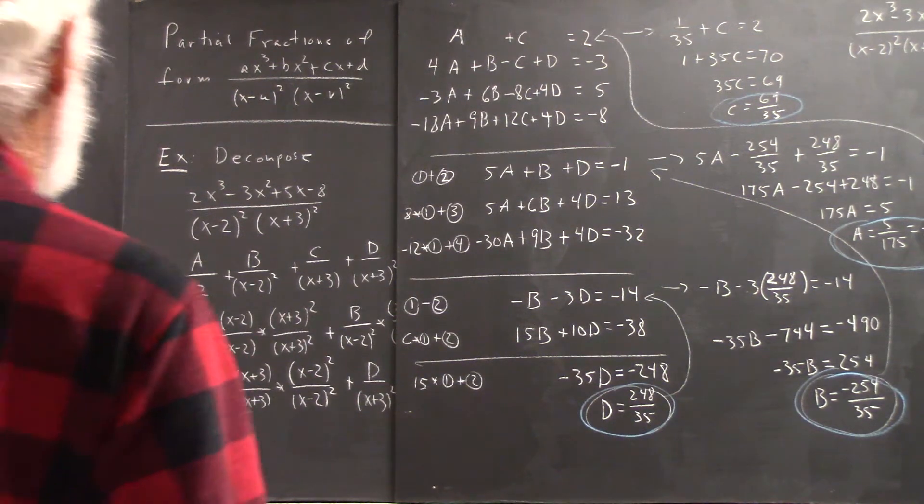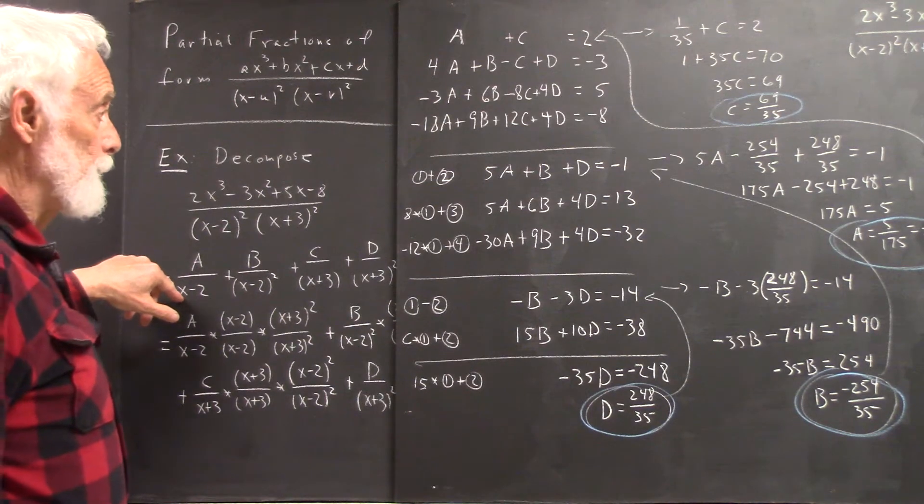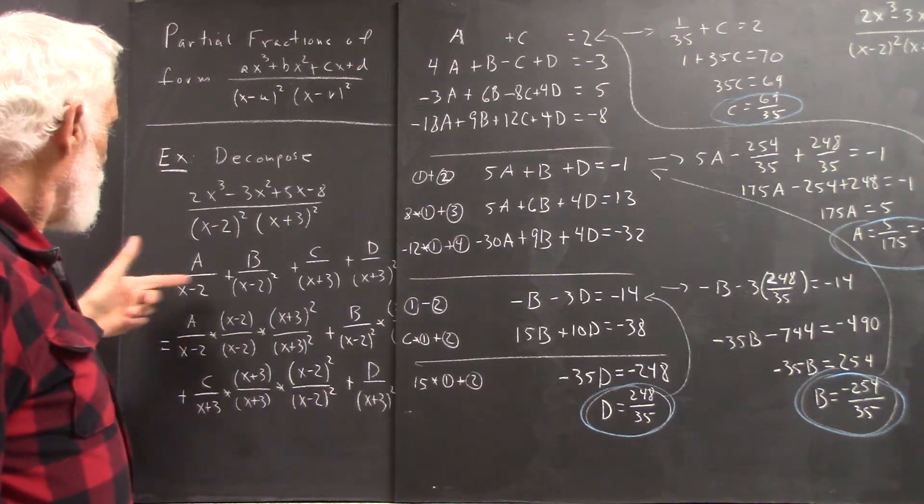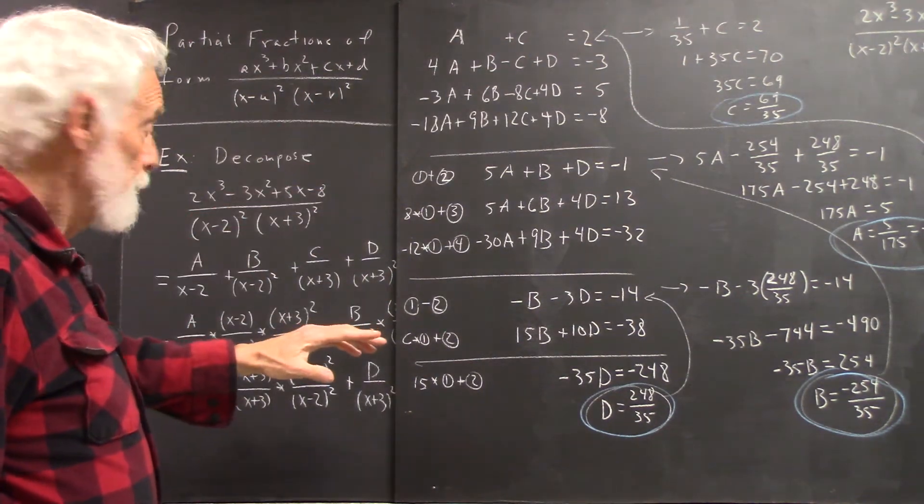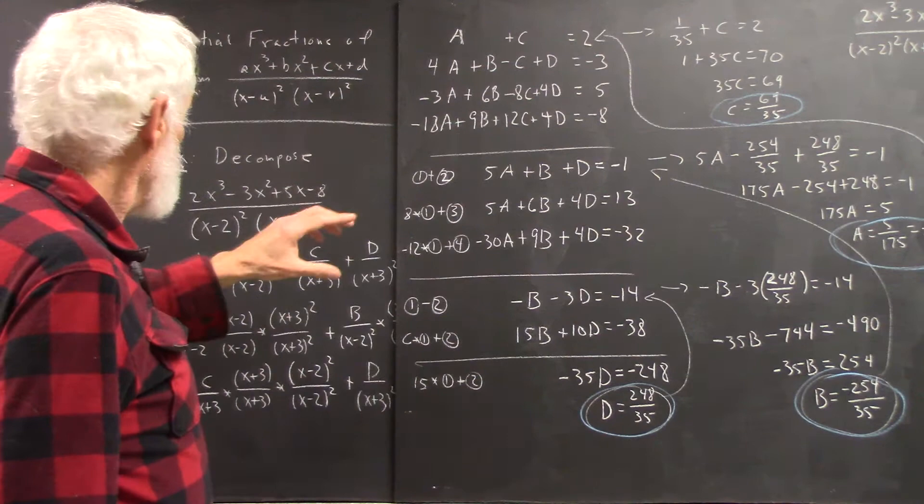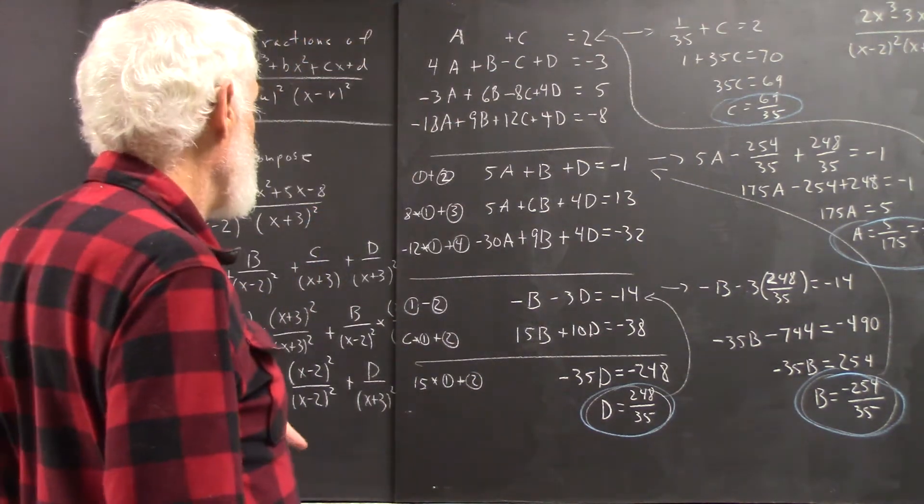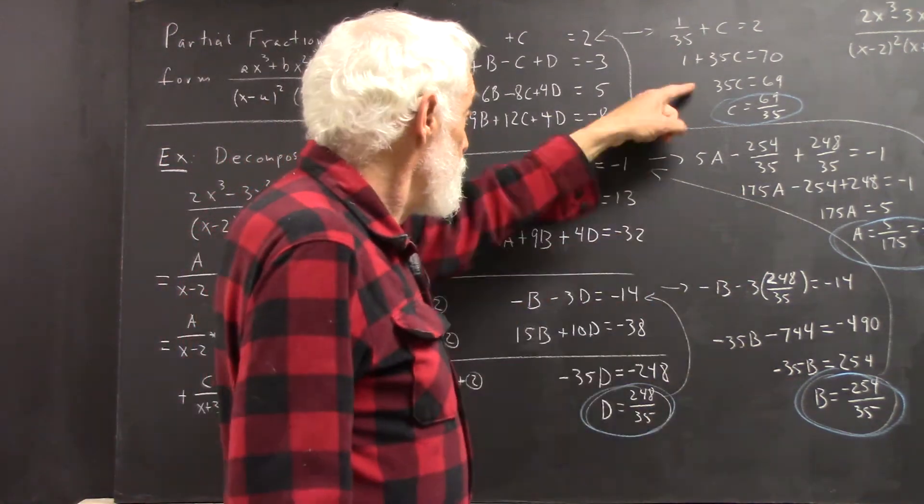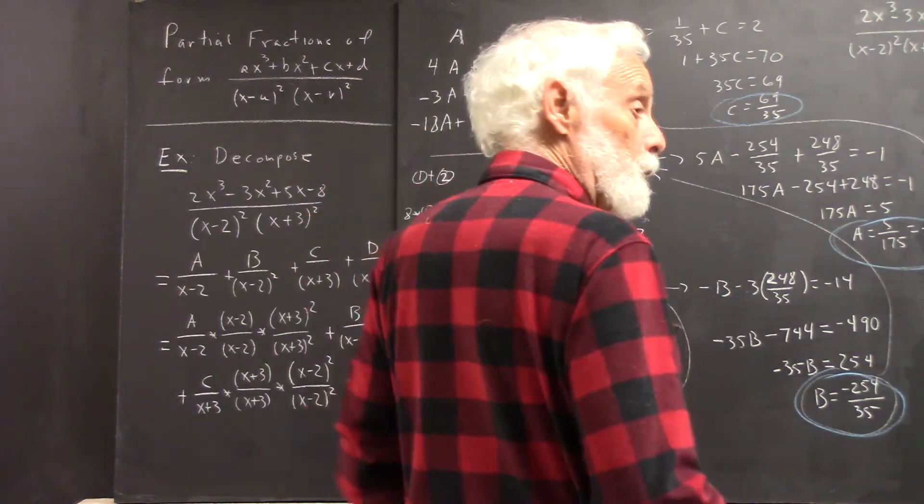Okay, we see our initial attempt at decomposition. We've simplified this expression, put it as a numerator over a denominator, set the numerators equal, obtained four equations, solved those equations for A, B, C, and D, and now we want to see whether we got it right.